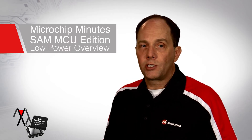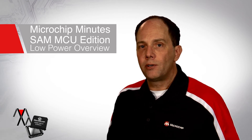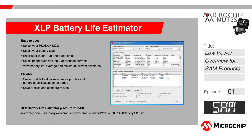The last tool I will discuss is the XLP Battery Life Estimator. It is a free software utility to aid you in developing extreme low power applications with Microchip MCUs. This tool allows you to estimate average current consumption and battery life. The utility also allows users to select the target device, battery type, the application's operating conditions such as voltage and temperature, and model the active and power-down times for their applications. Users can also create additional profiles for a custom battery of their choice if necessary.